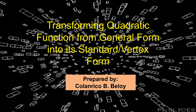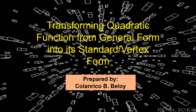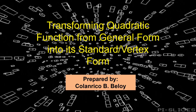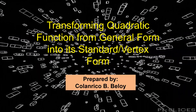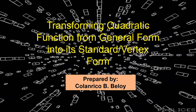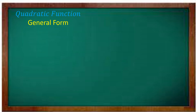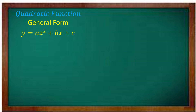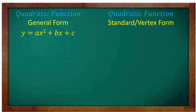You can also do it vice versa, from standard or vertex form going to general form. For quadratic function in general form, it is in the form of y is equal to ax squared plus bx plus c. The quadratic function in standard or vertex form is in the form of y is equal to a, quantity x minus h, squared plus k.